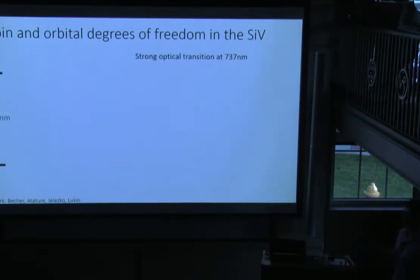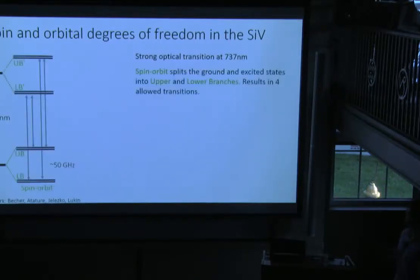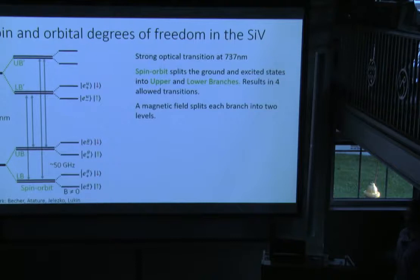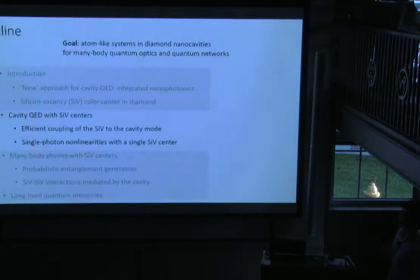SiV is a bright single photon source and has optically controllable spin and orbital degrees of freedom. Let's look at the SiV level structure. Excited and ground states are coupled by a strong optical transition at 740 nanometers. Spin-orbit coupling splits both levels into lower and upper branches, which results in four allowed transitions. If you apply external magnetic field, each branch will split into two Zeeman levels. For most of the talk, I will use only these two transitions, C and D, in zero magnetic field.